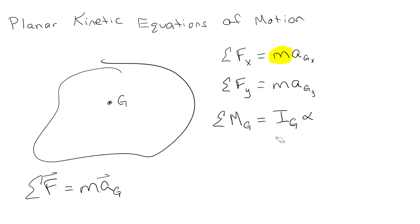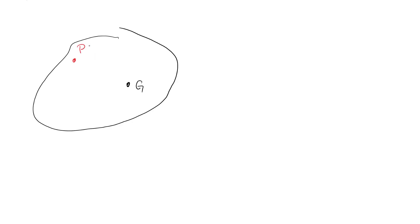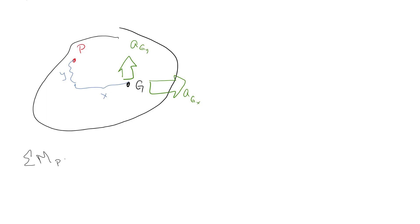The first two equations aren't too bad, but it gets a little annoying with the moment about G — what if we don't want to take the moment about G? Let me show you how that works mathematically. Say we have point G and some other point P that is easier to moment about. P is some distance X away and some distance Y away, and G is accelerating upward at a_Gy and to the right at a_Gx.